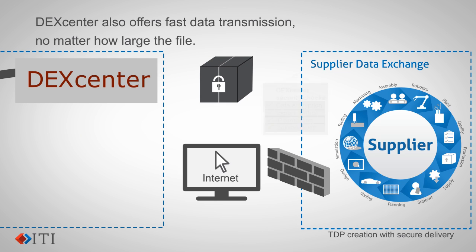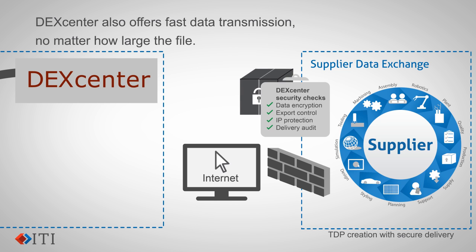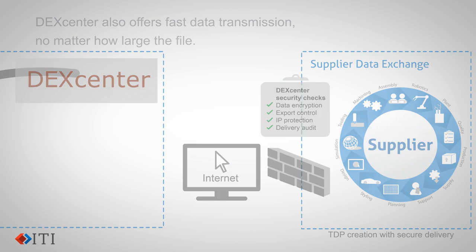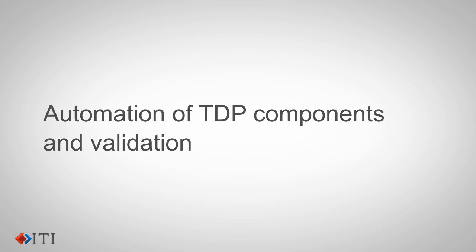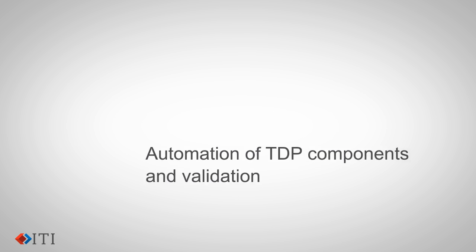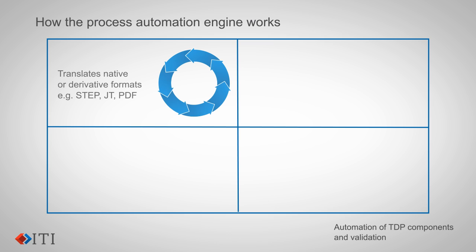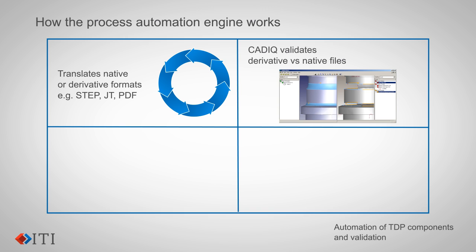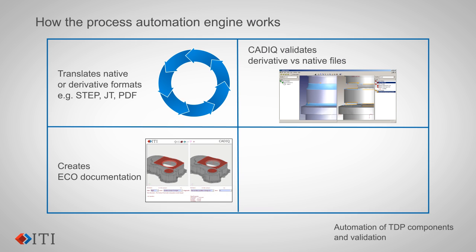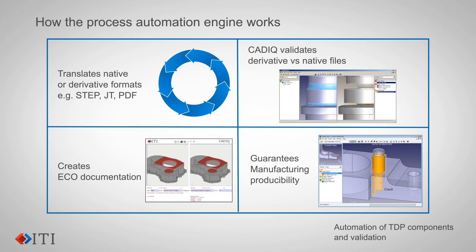DeckCenter ensures that security checks, such as data encryption, export control authorizations, IP protection, and delivery audits, are met during transmission. DeckCenter can also automate TDP components and validation. The process automation engine translates native or derivative formats such as STEP, JT, and PDF. Using CAD-IQ, DeckCenter validates derivative files compared to the original native files. ECO documentation is created, and manufacturing producibility is guaranteed.